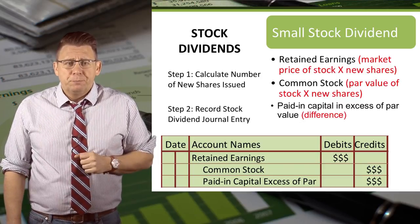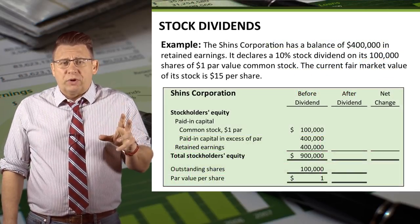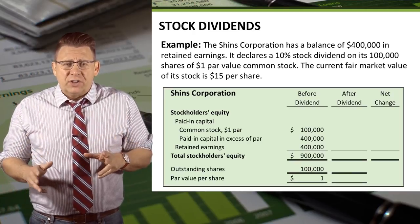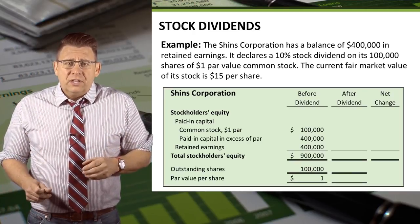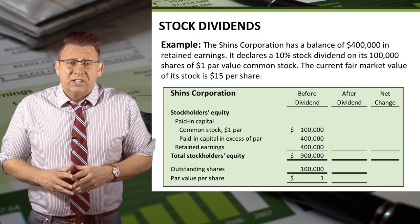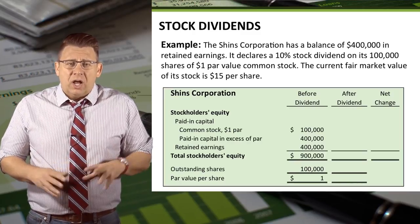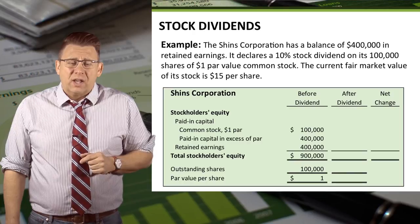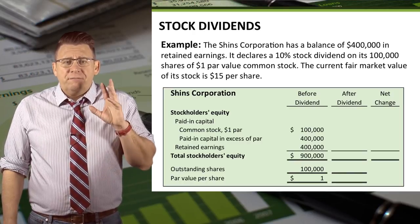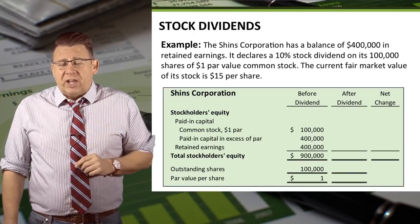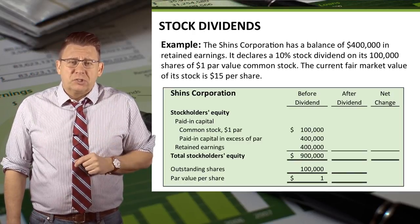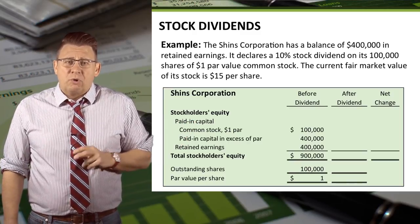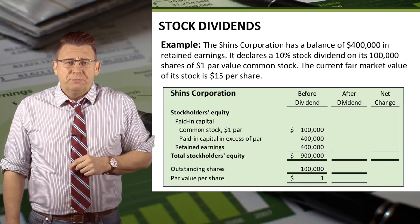The Shins Corporation has a balance of $400,000 in retained earnings. It declares a 10% stock dividend on its 100,000 shares of $1 par value common stock. The current fair market value of the stock is $15 per share. You can see the equity section prior to the stock dividend declaration.